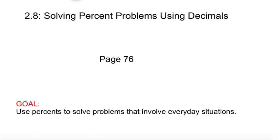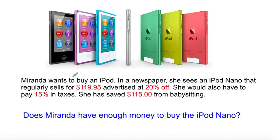Hello and welcome to lesson 2.8: Solving Percent Problems Using Decimals. You can follow along on page 76. The goal is to use percents to solve problems involving everyday situations. Miranda wants to buy an iPod Nano that regularly sells for $119.95, advertised at 20% off. She also has to pay 15% in taxes and has saved $115 from babysitting. Does Miranda have enough money to buy the iPod Nano?